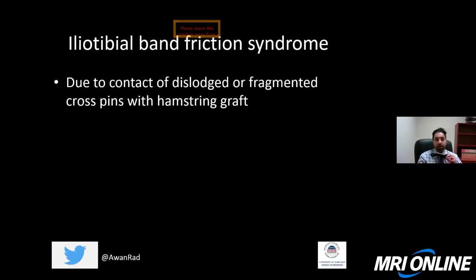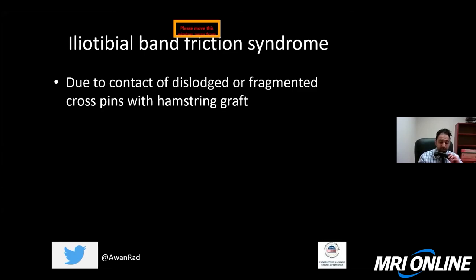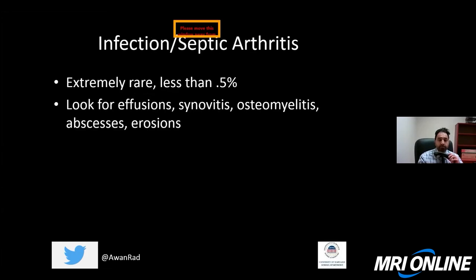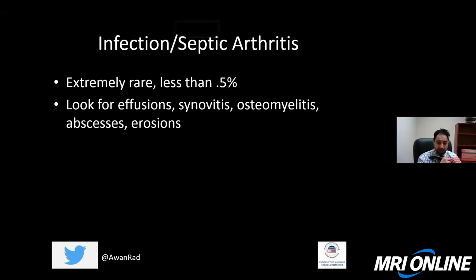Iliotibial band friction syndrome can occur with a hamstring graft, due to contact with dislodged or fragmented cross pins. This presents with thickening of the iliotibial band or edema between the iliotibial band and the lateral femoral condyle at Gerdy's tubercle on the proximal anterior lateral tibia. Infection and septic arthritis is a rare complication of ACL graft — less than 1% of cases — but we look for effusions, synovitis, osteomyelitis, synovial hypertrophy, erosive changes along the bones, and soft tissue abscesses.